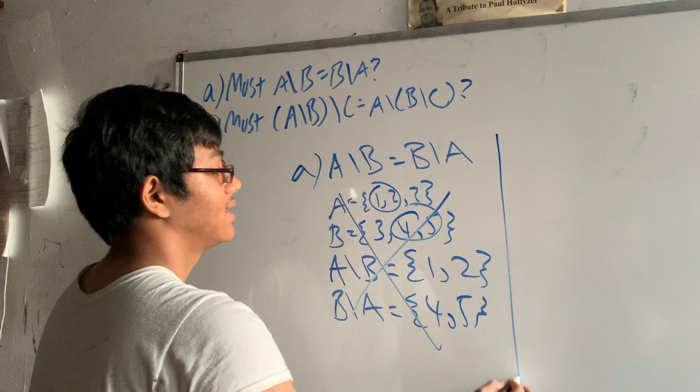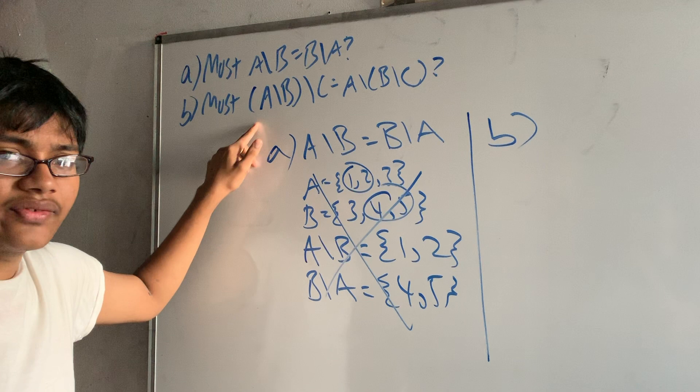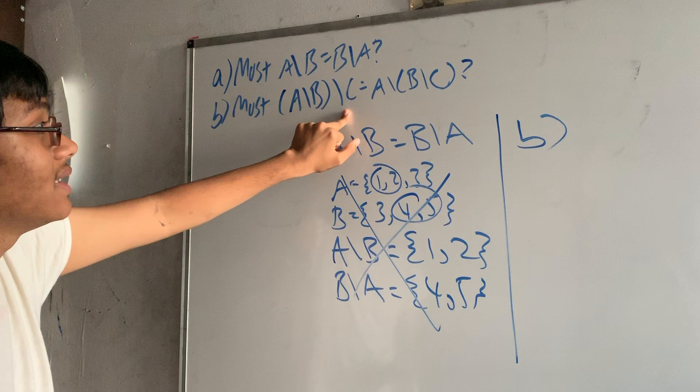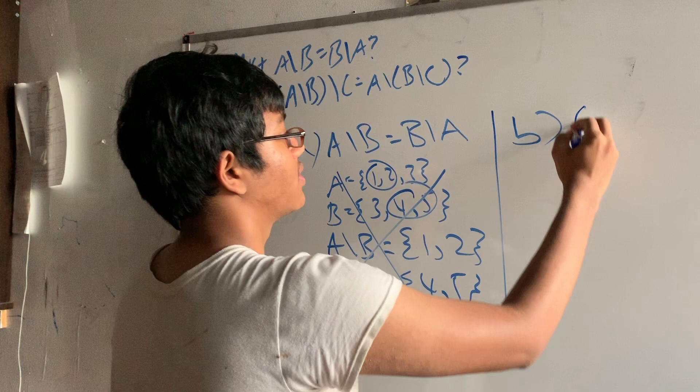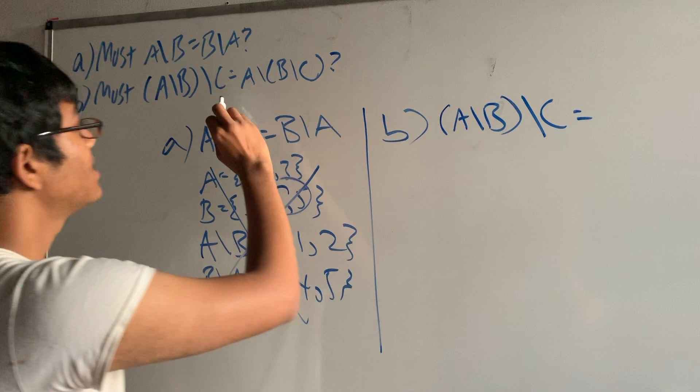So let's take a look at the second conjecture. We're being asked if set difference is associative. So is the difference of sets (A-B)-C equal to the difference of sets A-(B-C)? So let's try to do the same thing for this one.